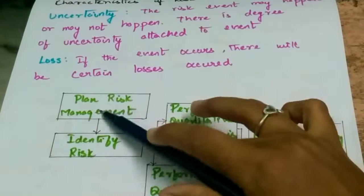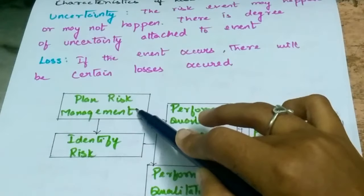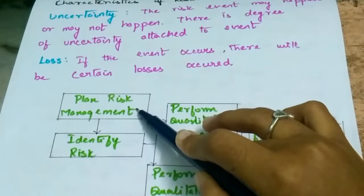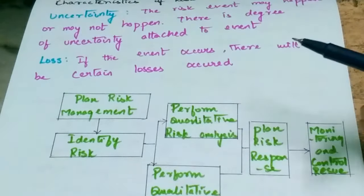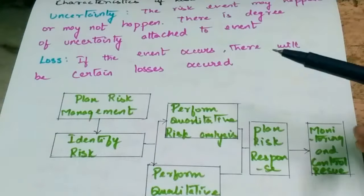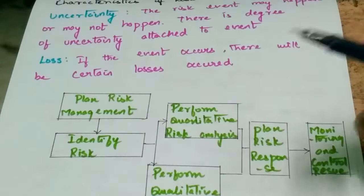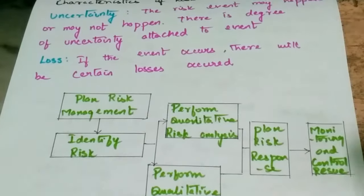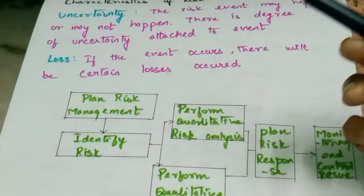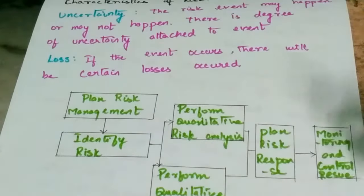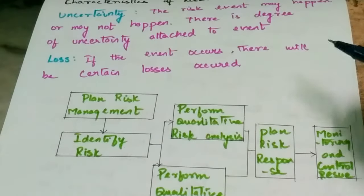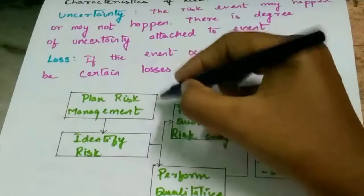First, plan risk management to prevent risk from occurring. Testing should be done. If there is a budget problem or time delay, allocate an extra 2% or 3% of the project budget as a buffer. Work should be managed accordingly.